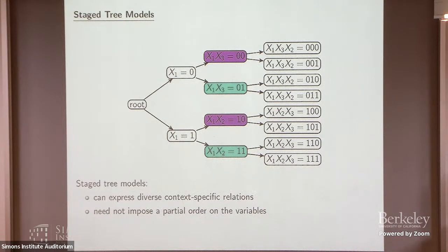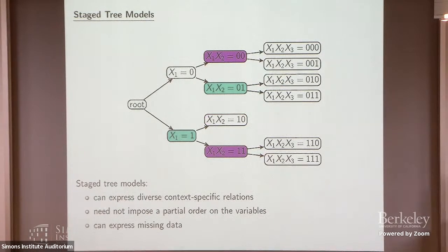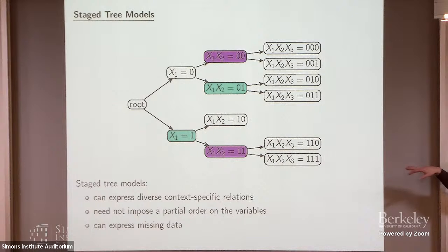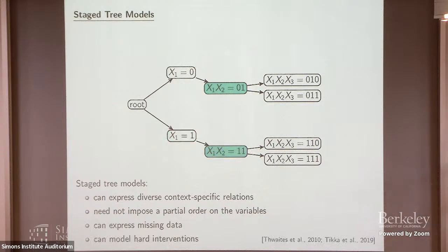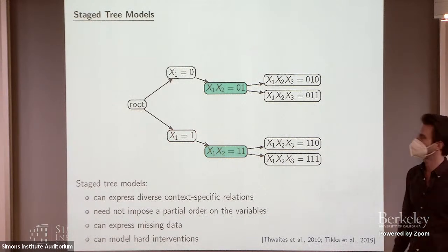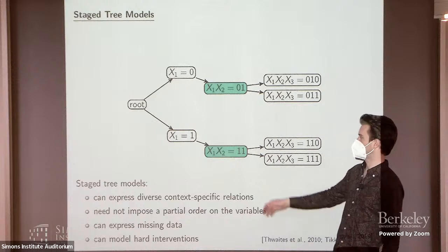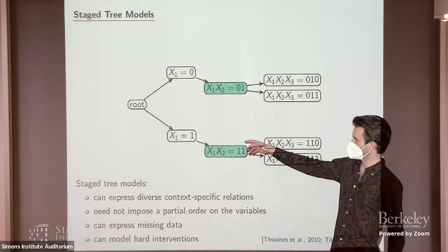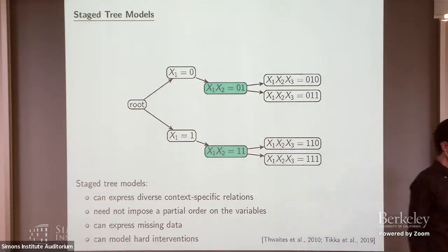We can go even further. By truncating trees, we can encode missing data or unobserved outcomes in certain contexts. We can also very easily represent hard interventions. For example, if you want to do x2 equal to 1, we just truncate the tree there.